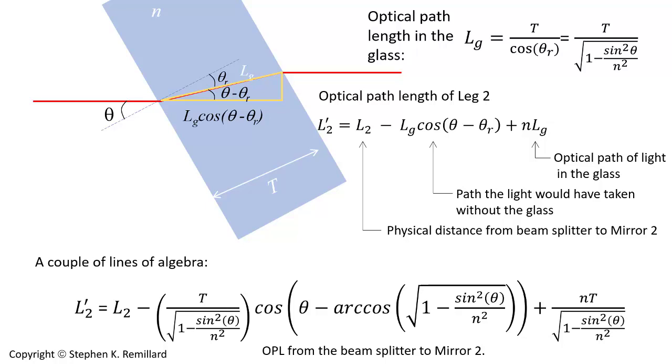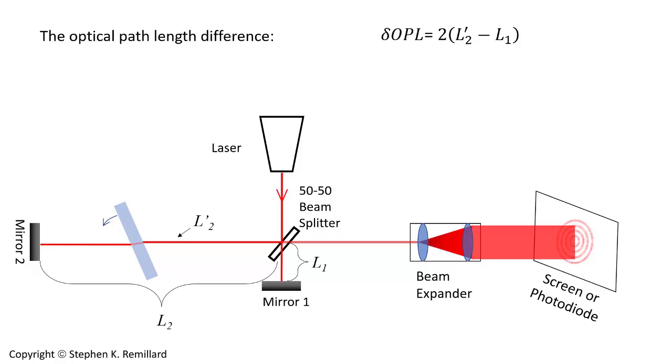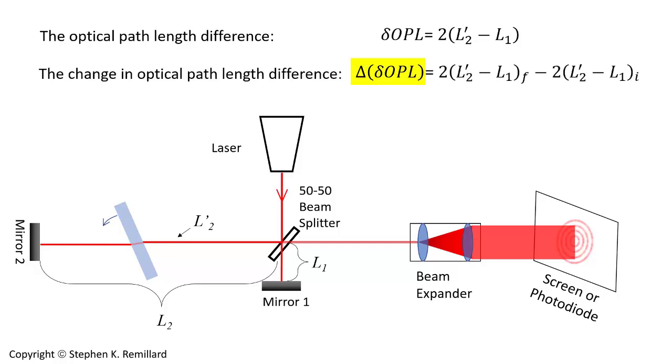How do you turn that into an experimental result? You have to consider that difference in optical path length between the two legs, L1 and L2. Call that 2 times L2 prime minus L1. The 2 is there because light goes down from the beam splitter, hits the mirror, and comes back. So it goes through each path twice. And as you rotate the glass, there will be a change in optical path length difference. Delta, delta OPL. So it's that expression 2 times L2 prime minus L1 at the end of the rotation minus what it was to start with. If that change in optical path length difference equals one wavelength of light, then one fringe will pass by out on the screen.